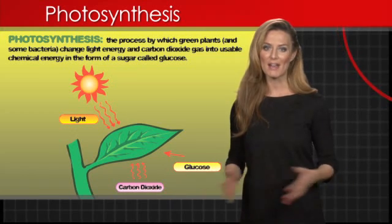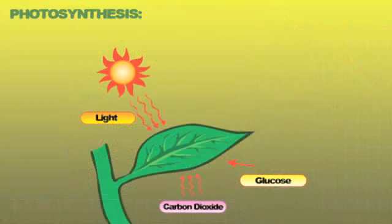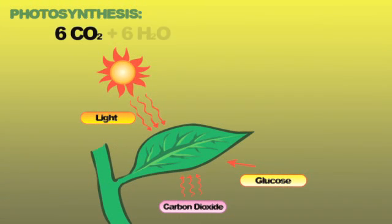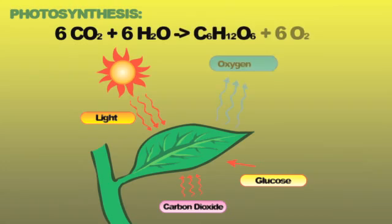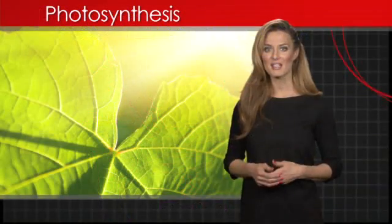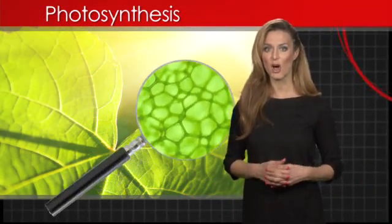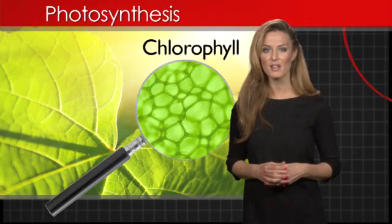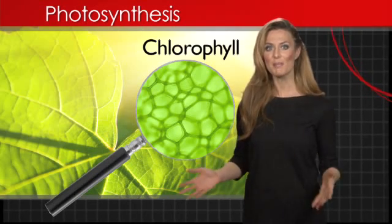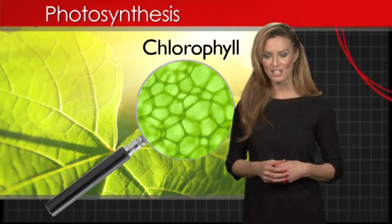The overall biochemical reaction for photosynthesis is carbon dioxide plus water yields glucose and oxygen gas. Light energy, usually from the sun, and a special green pigment molecule called chlorophyll are needed to complete this reaction.